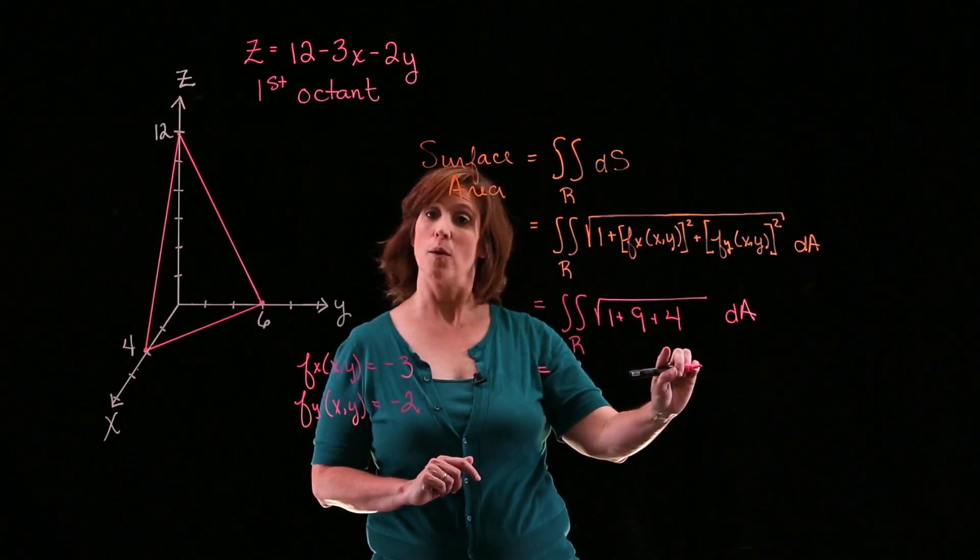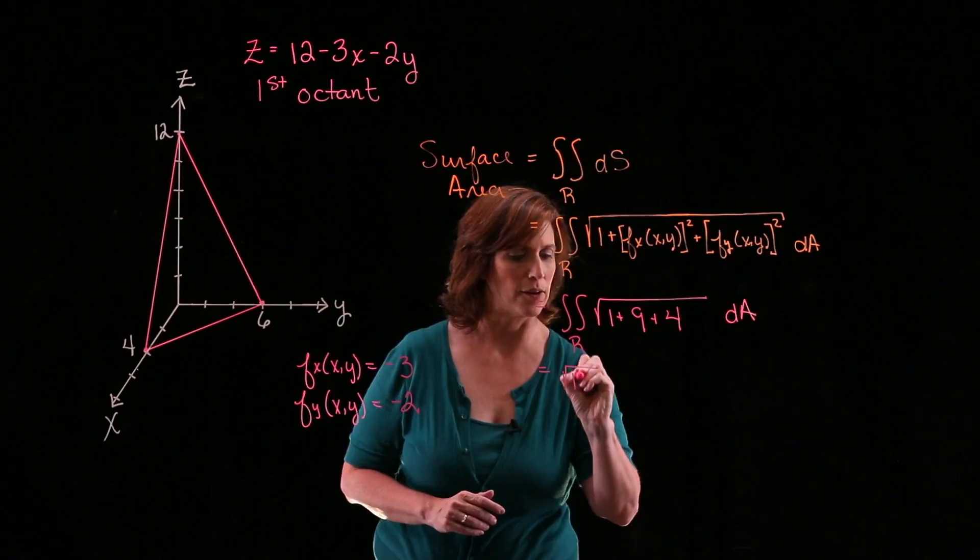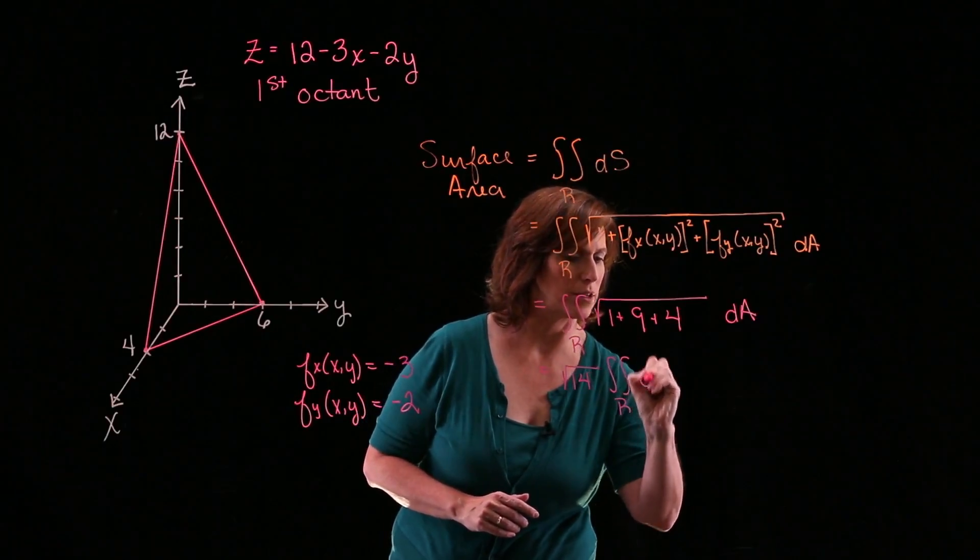This is just going to be the square root of 14, which is a constant. So I can pull it outside of my integral. So I've got the square root of 14 times the double integral over a region.